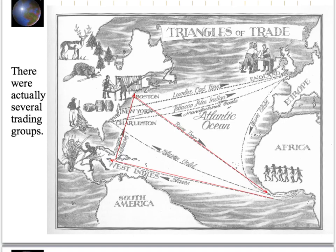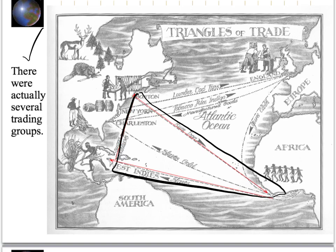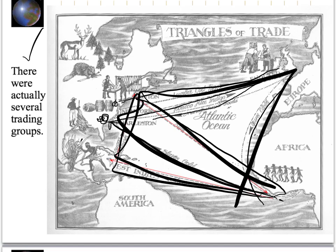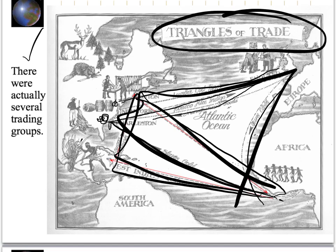Here's another picture looking at the triangular trade routes. There were actually several trading groups. We've got things leaving from the Middle Colonies and Southern Colonies, slaves going from Africa up to the Southern Colonies, things leaving the New England Colonies going to England and coming back as finished products, tobacco, rice, and indigo leaving the Southern Colonies going to England, and guns and cloth coming back down. So really there are multiple triangles that can be drawn, and they are called the triangular trade routes.